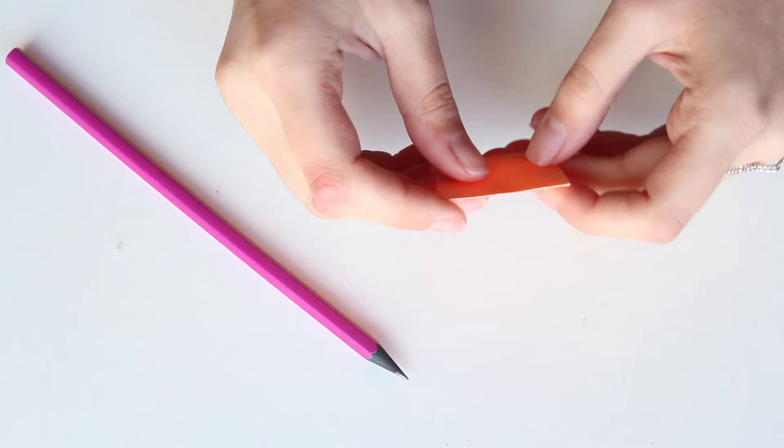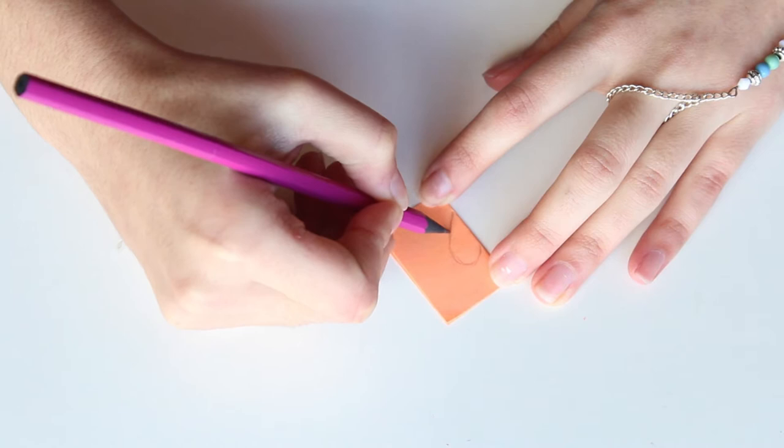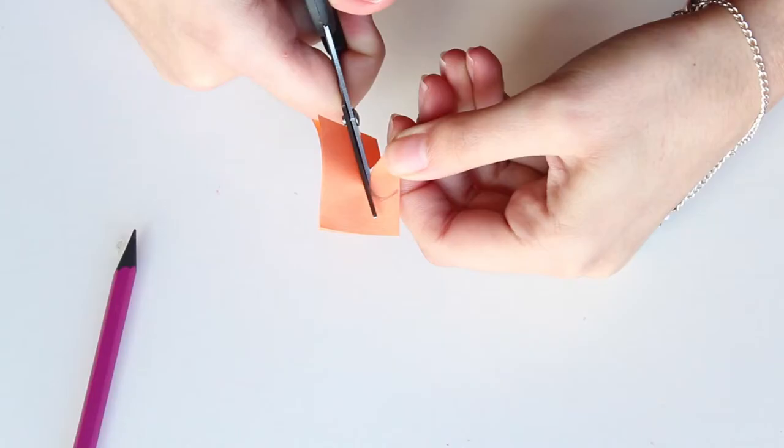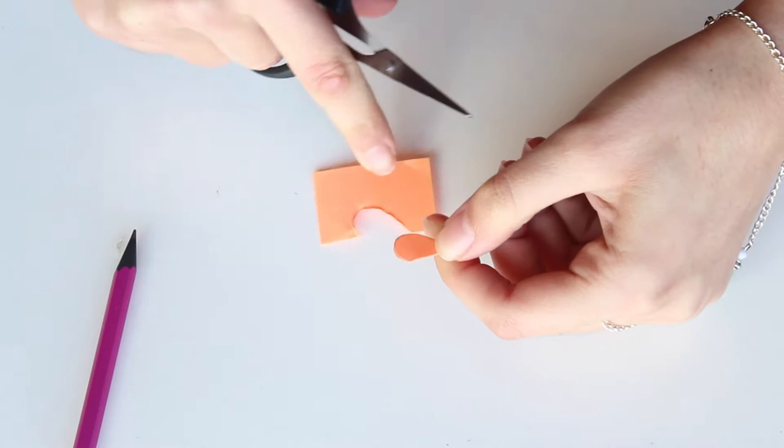First of all, you need to make a template so all the hearts look the same. To do that, get a piece of paper, fold it, and trace half of a heart. Then cut it and unfold the paper. There you have it, a perfect symmetrical heart.